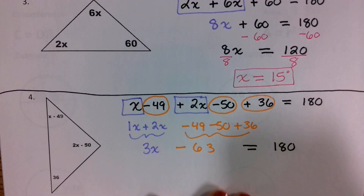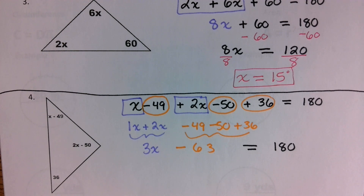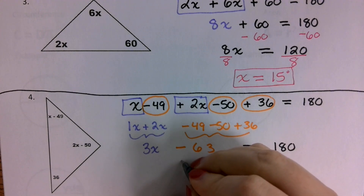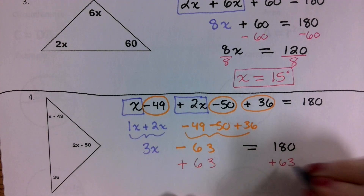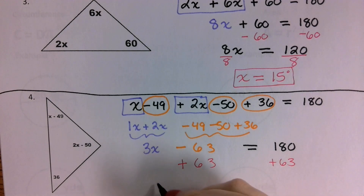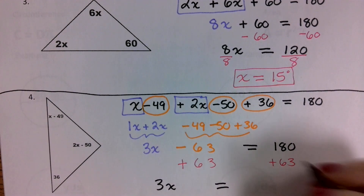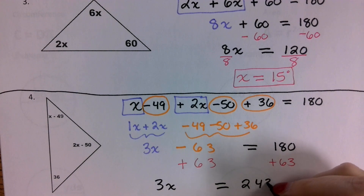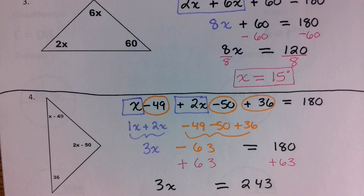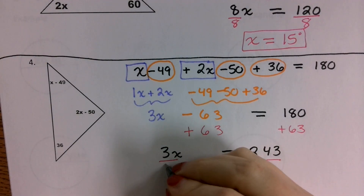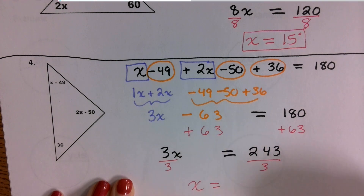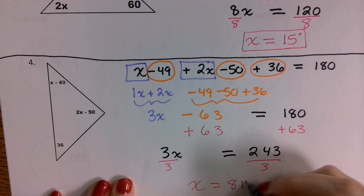The whole thing is set equal to 180. Our first inverse operation is to add 63 to both sides. That leaves us with 3x is now equal to 243. Then we divide both sides by 3, and we get that x is going to be equal to 81 degrees.